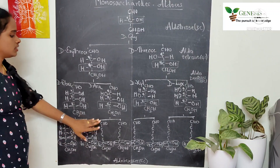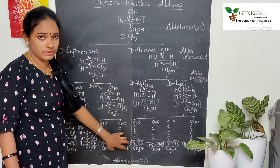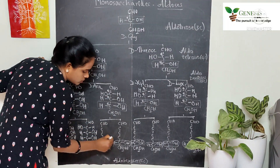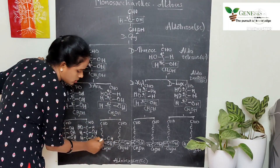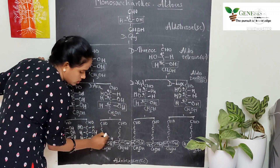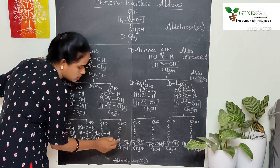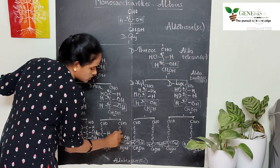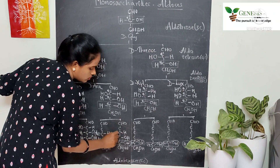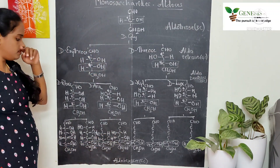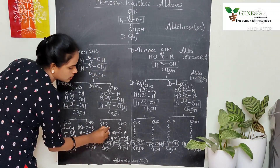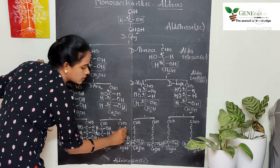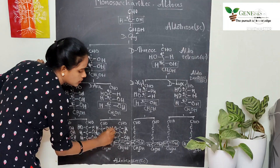The next two aldohexoses are derivatives of D-arabinose. Using arabinose as the reference, we write down the structure: OH, H, H, OH working from the farthest carbon inward. The same configuration is applied to both derivatives. For the remaining chiral center, the first compound has OH on the right and H on the left, and the second has H on the right and OH on the left.